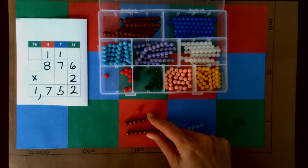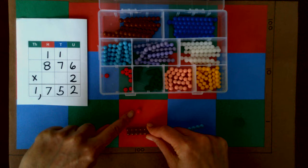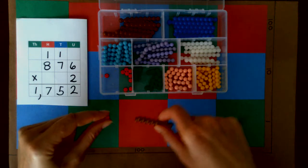The final step is to combine our hundreds. I have eight and eight, that's 16 plus the one is 17. We're going to make that exchange.